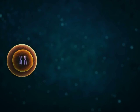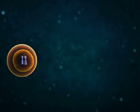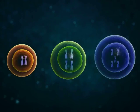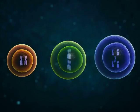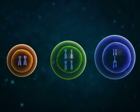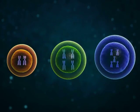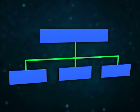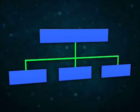Haploid cells contain small-sized nuclei in comparison to those of diploid cells. Likewise, polyploid cells contain larger nuclei than diploid cells. Thus, the size of the nucleus depends on the volume of the cell, the amount of DNA and proteins, and the metabolic phase of the cell.